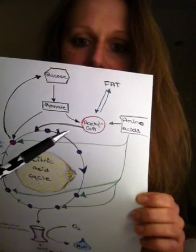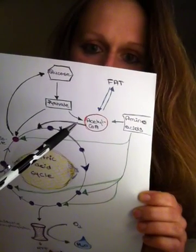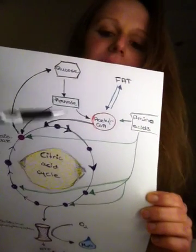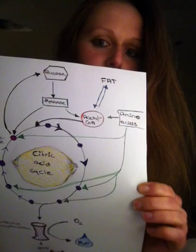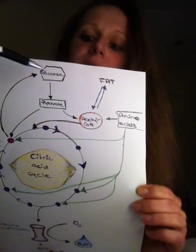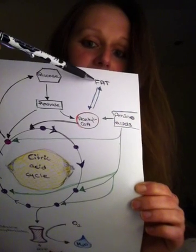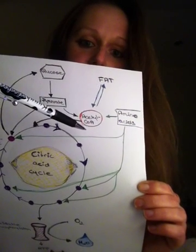Now back to the top. Here's acetyl-CoA. It's one of the main intermediates for our energy metabolism. Because glucose can be broken into acetyl-CoA, fat can be broken down into acetyl-CoA.